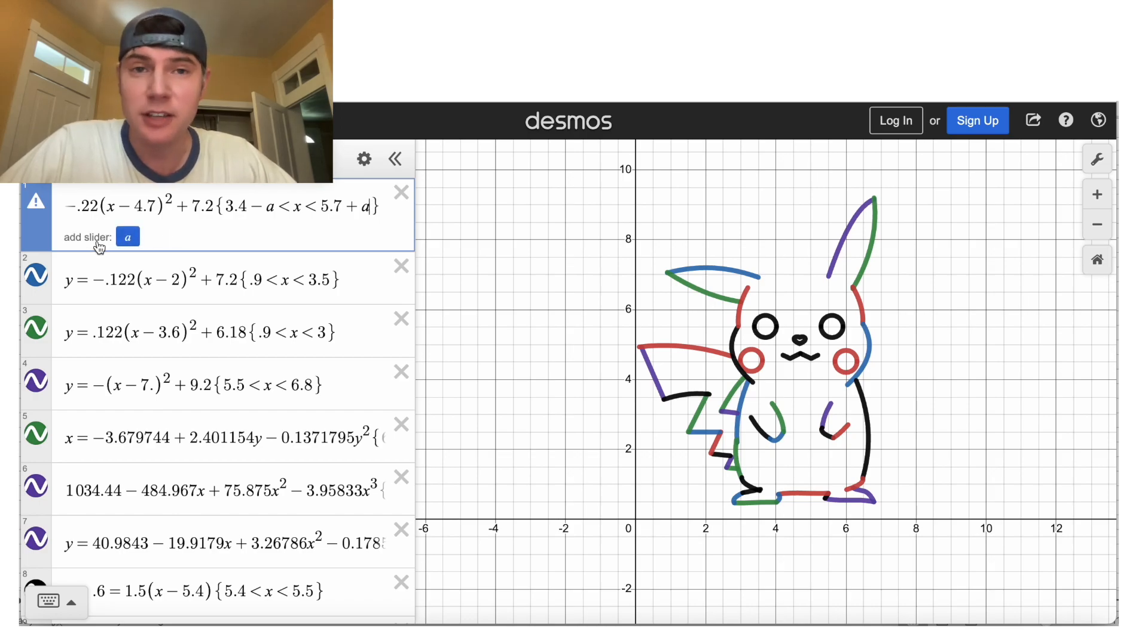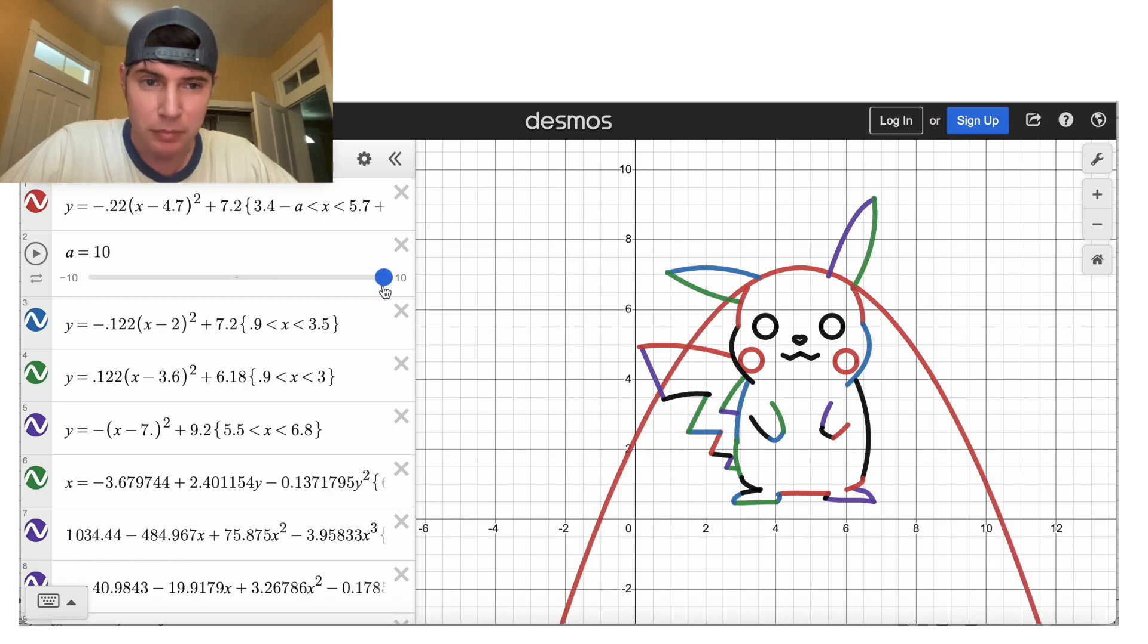And then it's going to ask us to add slider. We're going to say yes, and we do that by clicking on it. Now, as we make this really big, made the graph of this first equation get very large.